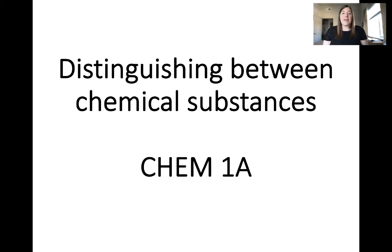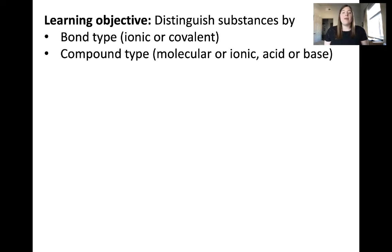In this video, I'll provide some guidelines for how you can distinguish between different types of chemical substances. Our objective is to distinguish substances by either bond type, ionic or covalent bonds.